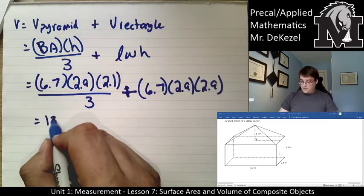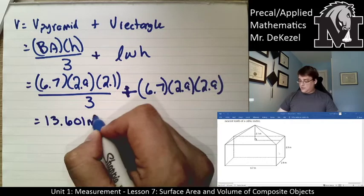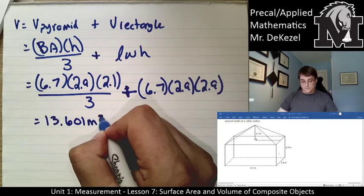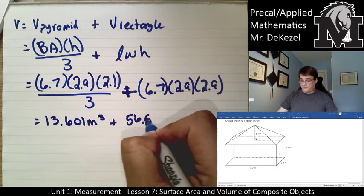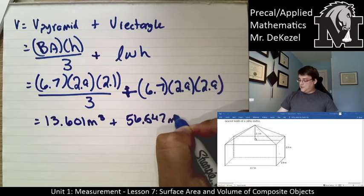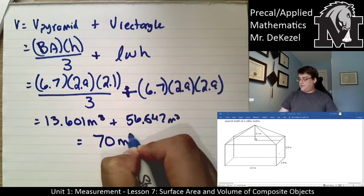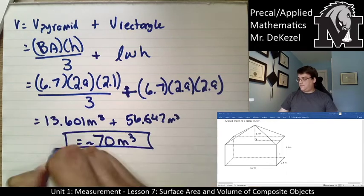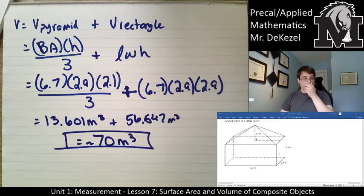We get 13.601 meters cubed plus 56.347 meters cubed, for a total of 70 meters cubed. That is the volume of that composite object.